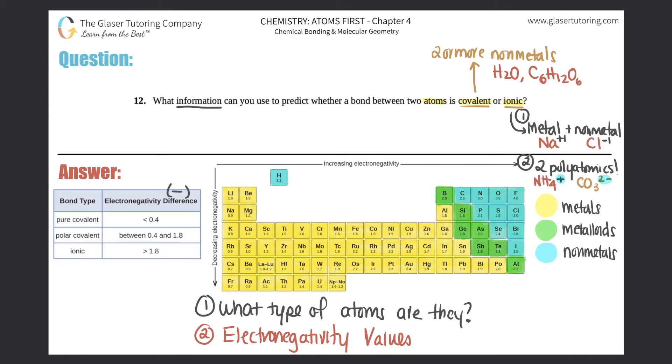Here, if it's between 0.4 and 1.8, it's polar covalent, but still it's a covalent bond. And then if it's ionic, it would be greater than 1.8. So let me give you an example of that.